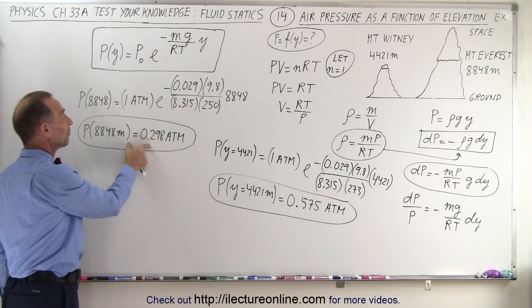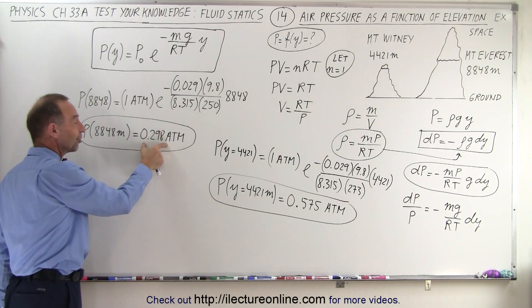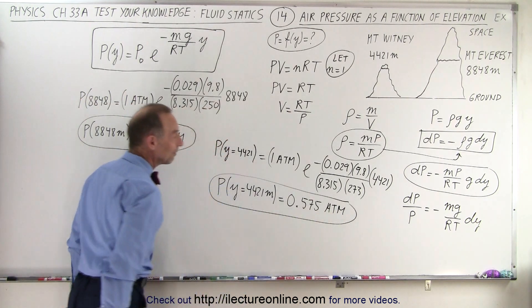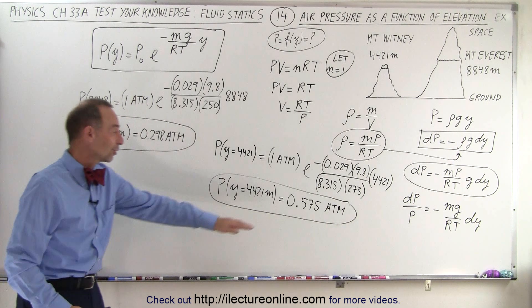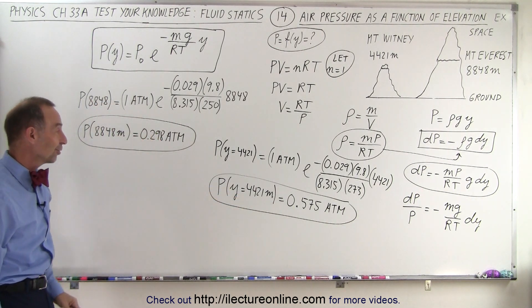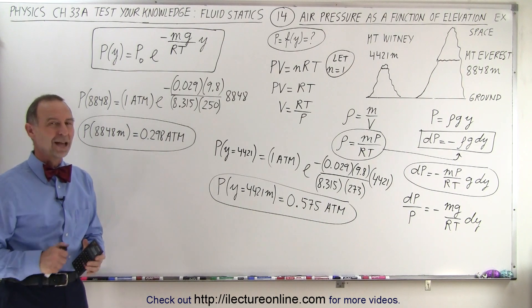So you can see that on top of Mount Everest, the air pressure is about 30% of sea level. On top of Mount Whitney, it's about 58% of sea level. And so that's not quite as bad, but it's pretty tough when you get that elevation because you don't have a lot of air. And that's how we know.